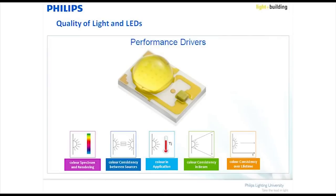That brings me to the five main elements of quality of light. The first is color spectrum and color rendering. We're talking about CRI, CQS, the GAI index, and specific R values — for example R15 and R9.